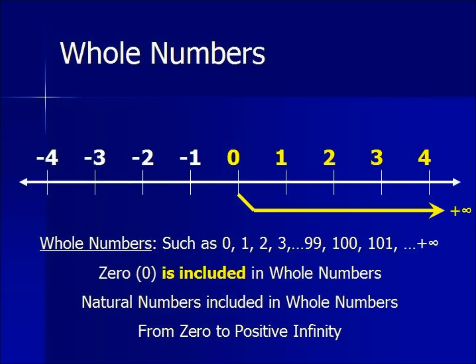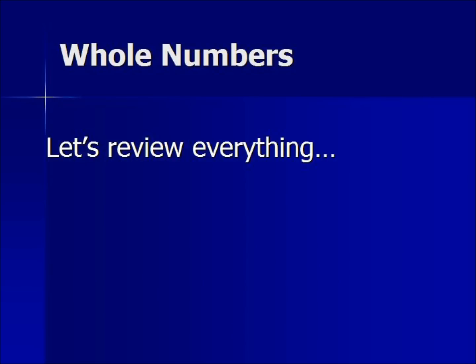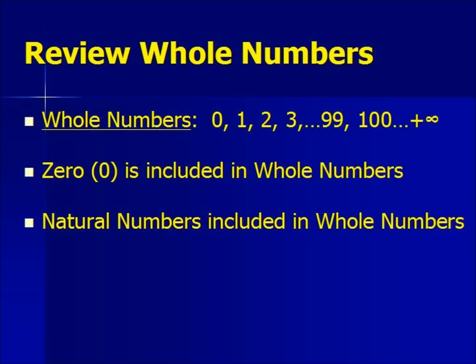Now let's review real quick before we go. Whole numbers include 0, 1, 2, 3, 99, 100, stretching all the way to positive infinity. Zero is included in whole numbers. Natural numbers are a subset or a part of whole numbers.